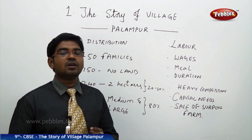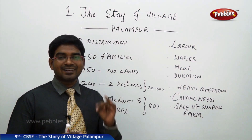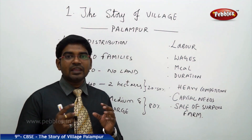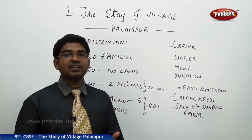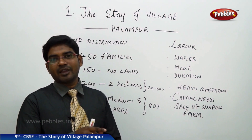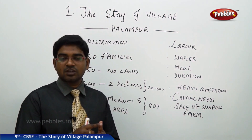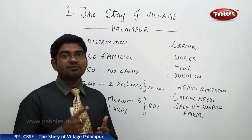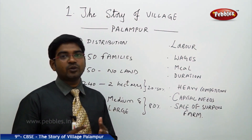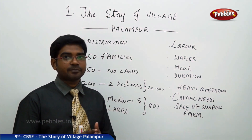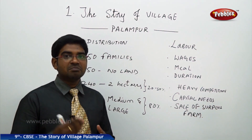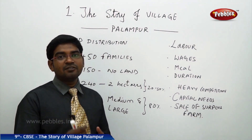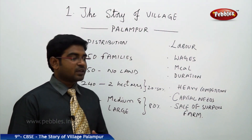Traditionally, they used natural manures, cow dung, traditional seeds, and less water — all at very low cost. Nowadays, we use high-yielding variety seeds which must be bought from the market. Then you need pesticides, fertilizers, and large amounts of water, requiring bore wells, machinery, and full setup. So all these together require a lot of investment towards your crop.